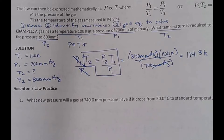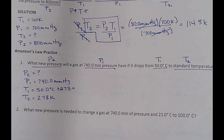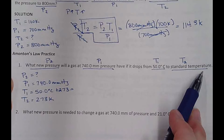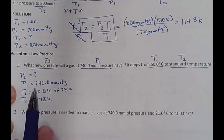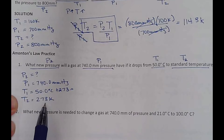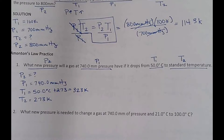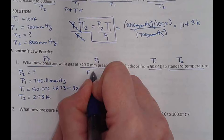Next: what new pressure will a gas at 740 mmHg have if it drops from 50 degrees Celsius to standard temperature? I'm looking for P2. Initial pressure P1 = 740 mmHg. Temperature goes from 50°C to 273 K (standard temperature). Since 50°C + 273 = 323 K, T1 = 323 K and T2 = 273 K. Temperature is dropping, so pressure should also drop — if your answer went up, you plugged it in wrong.